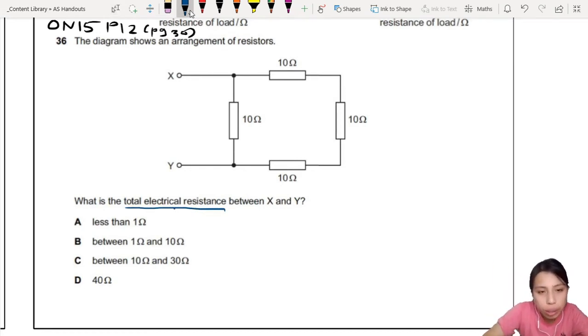If they want total electrical resistance between X and Y, you can assume that you're connecting a battery like this. Okay, total electrical resistance means they connect. The second tip is, so you have the battery here.